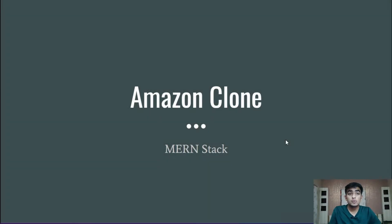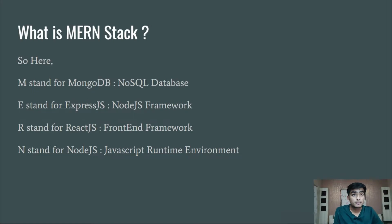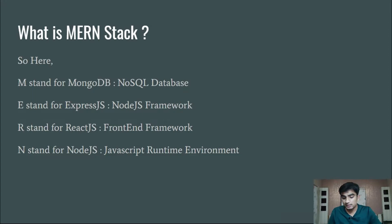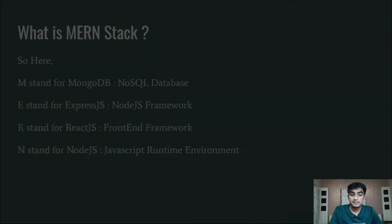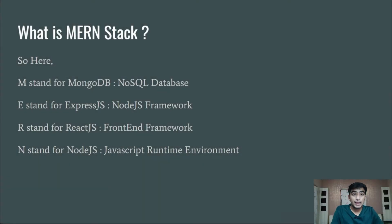Before we start, let's understand what is MERN stack. M stands for MongoDB, the NoSQL database which we are going to use to store products data, user data, and orders placed by the user. E stands for Express.js, a Node.js framework which we are going to use to handle APIs in our app. R stands for React.js — React.js is the best front-end framework used to develop our UI. And N stands for Node.js, a JavaScript runtime environment.